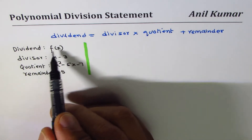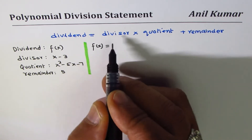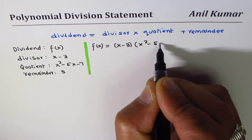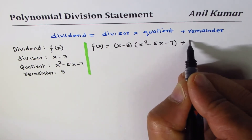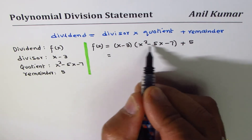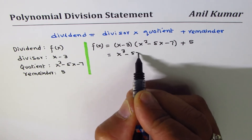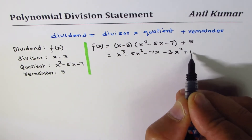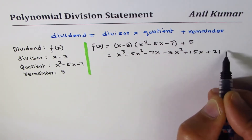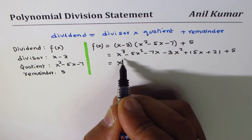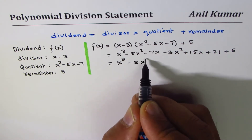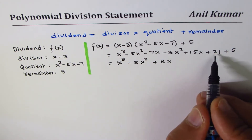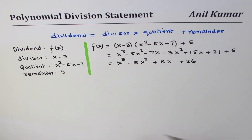We want to find f(x), so we multiply the divisor and quotient: (x minus 3) times (x squared minus 5x minus 7), then add the remainder 5. Multiplying gives us x cubed minus 5x squared minus 7x, minus 3x squared plus 15x plus 21, plus 5. Combining like terms gives x cubed minus 8x squared plus 8x plus 26.